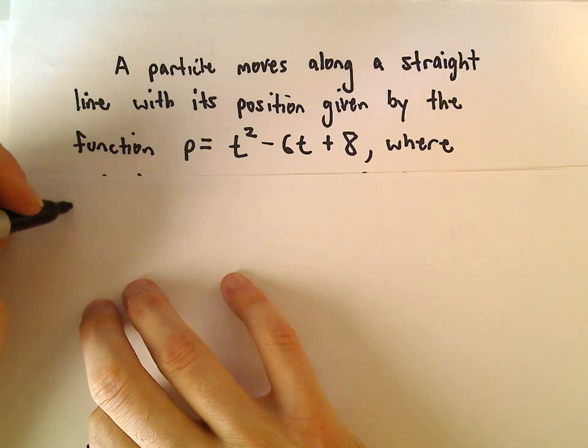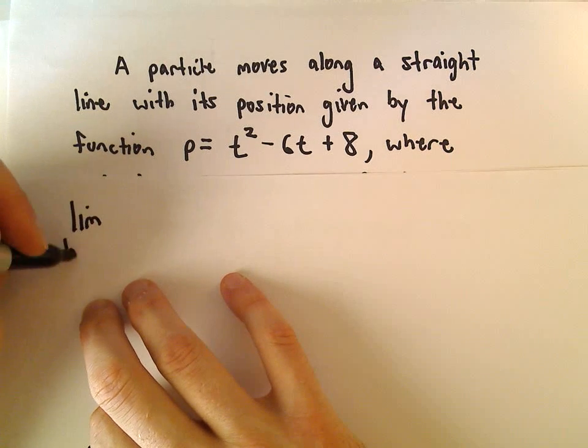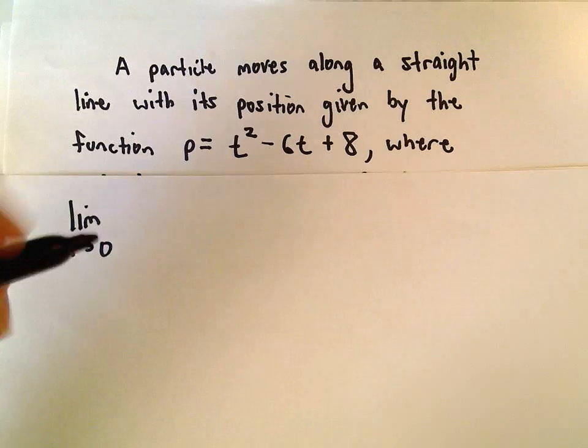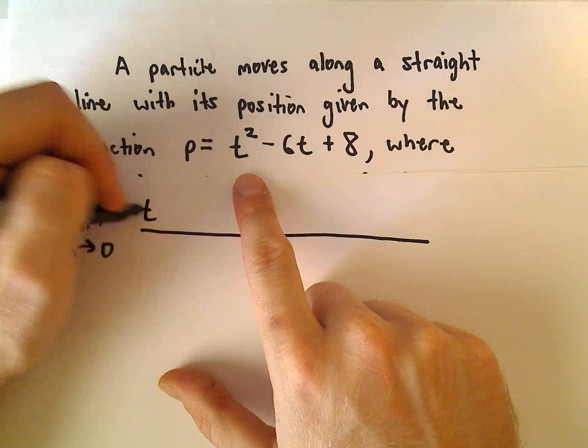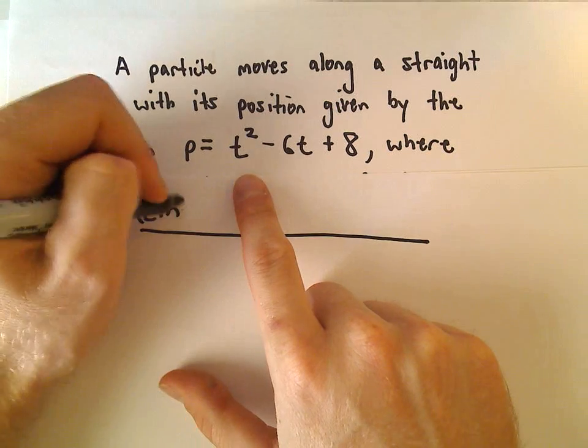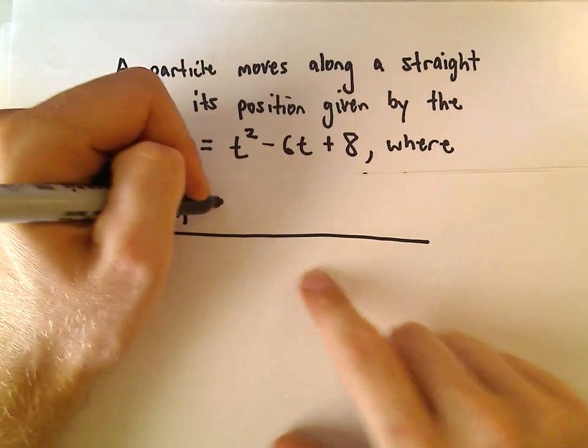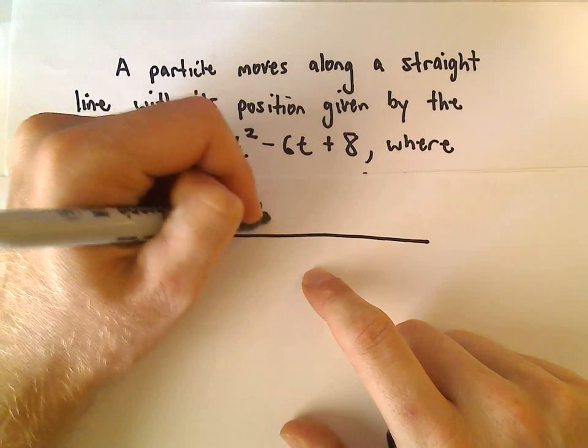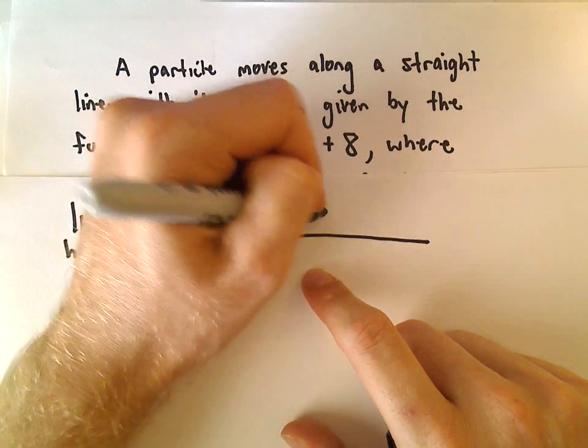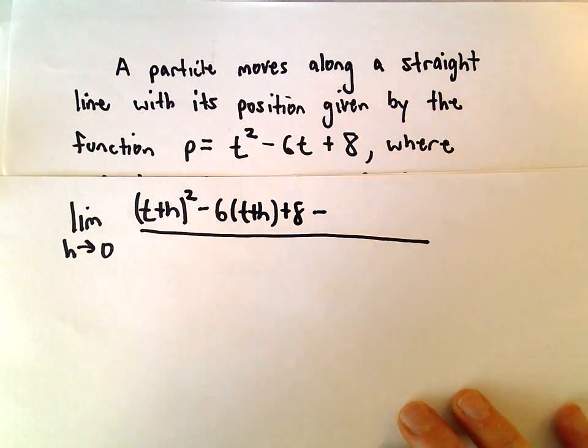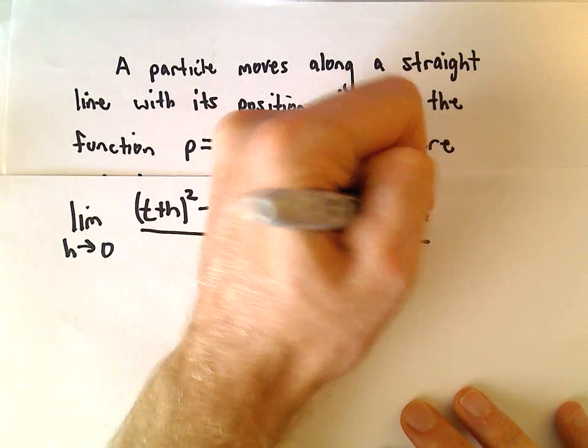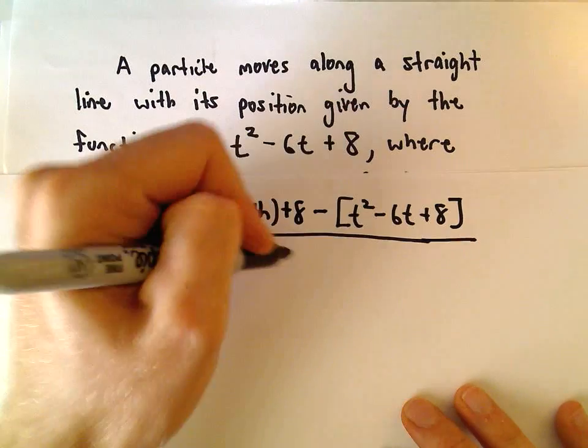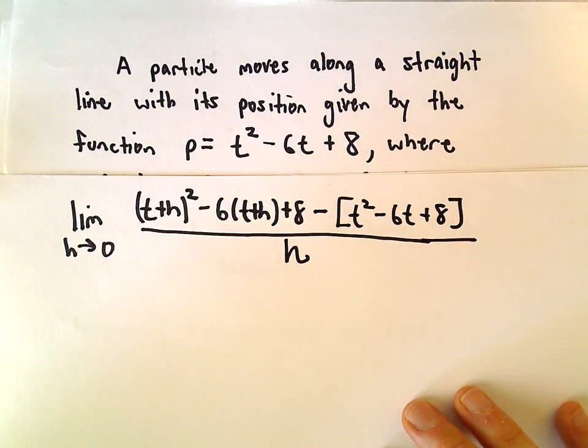So we'll use our definition. We've got the limit as h approaches 0, and what we'll have to do is everywhere there's a t, we'll replace that with t plus h. So we'll have t plus h squared minus 6 times t plus h plus 8, and then we have to subtract away the original function, so t squared minus 6t plus 8, and then all of that will be divided by h.